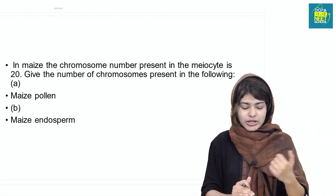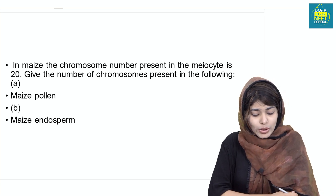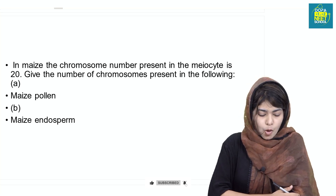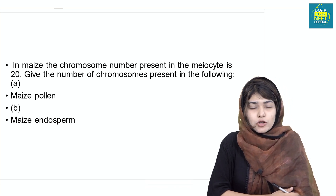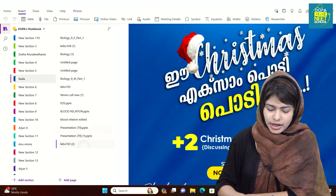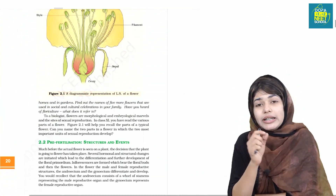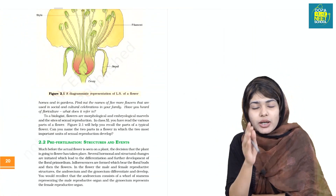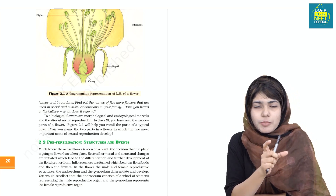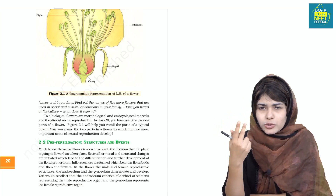Now, a previous question: the chromosome number present in a maize meiocyte is 20. Give the number of chromosomes present in maize pollen. This is very important. The meiocyte mother cell, pollen, egg, embryo, and endosperm all have different chromosome numbers.